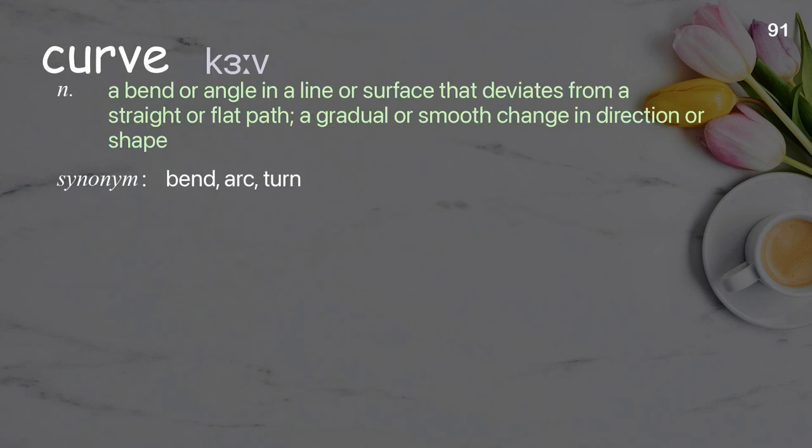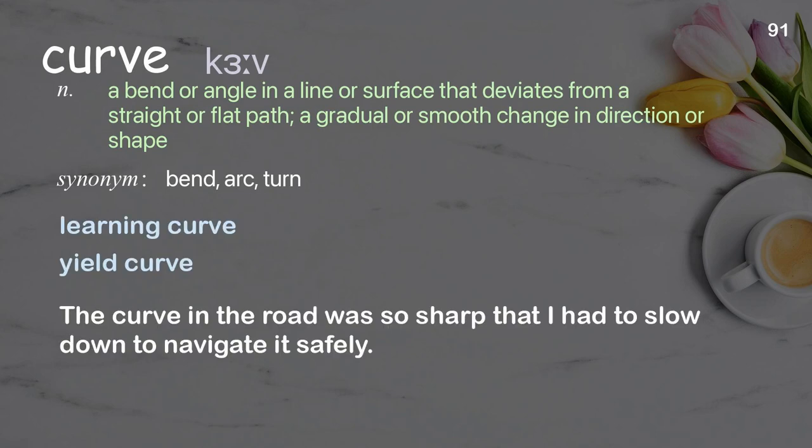Curve: a bend or angle in a line or surface that deviates from a straight or flat path; a gradual or smooth change in direction or shape. Examples: learning curve. The curve in the road was so sharp that I had to slow down to navigate it safely.